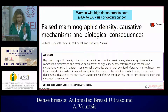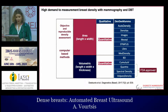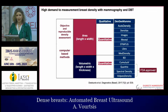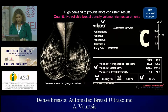Therefore, there is high demand to measure breast density with both mammography and DBT. There are FDA-approved software solutions dedicated to providing more objective and reproducible density assessment, rather than radiologists relying on visual assessment of BIRADS categories A through D. We have been working with Volpara software, which provides quantitative, reliable volumetric breast density assessment — including volume of fibroglandular tissue, volume of breast density in centimeters, and volumetric breast density.